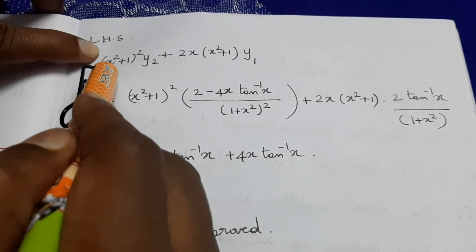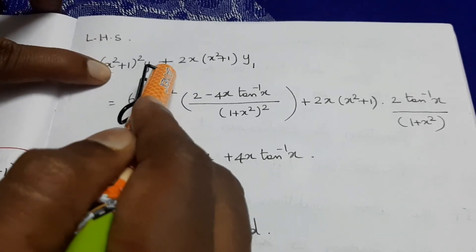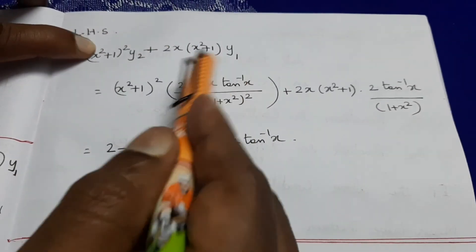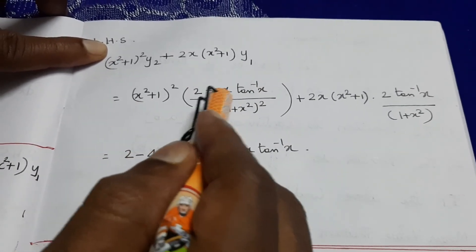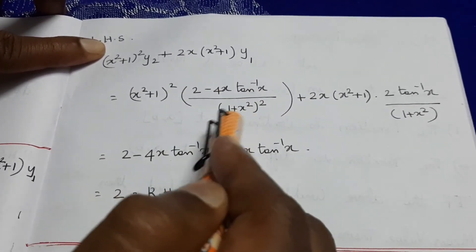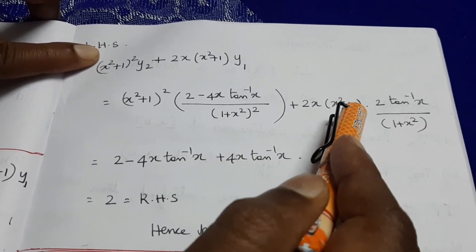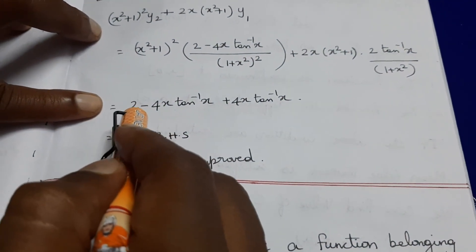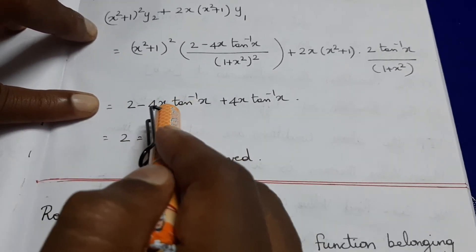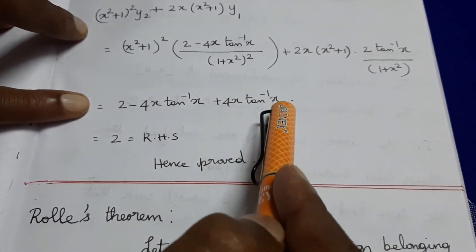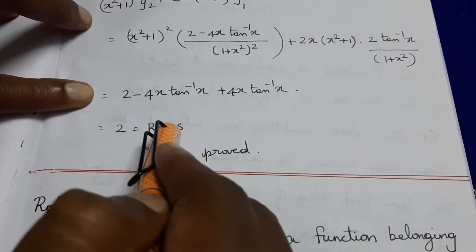Evaluating the left-hand side: (x²+1)² times y₂ plus 2x(x²+1) times y₁. Substituting y₂ equals (2 minus 4x·tan⁻¹x) divided by (1+x²)² and y₁ equals 2·tan⁻¹x divided by (1+x²), the (1+x²)² and (1+x²) terms cancel, giving 2 minus 4x·tan⁻¹x plus 4x·tan⁻¹x equals 2, which equals RHS. Hence proved.